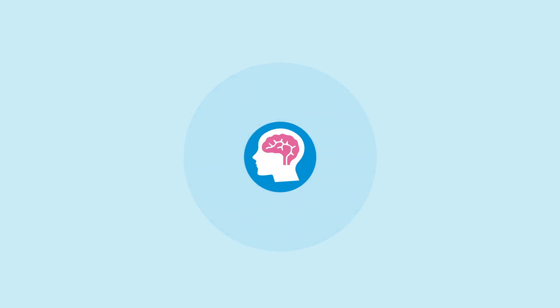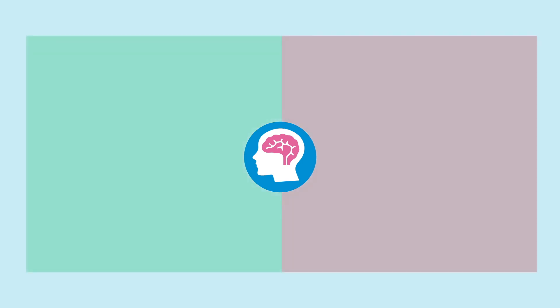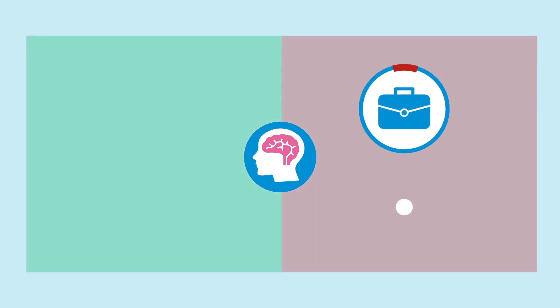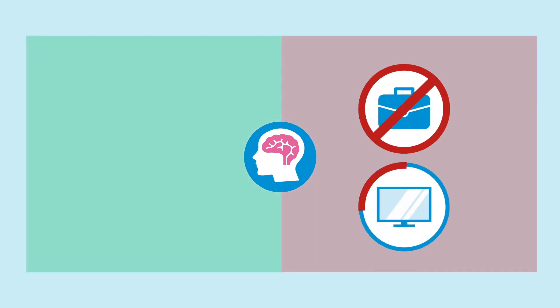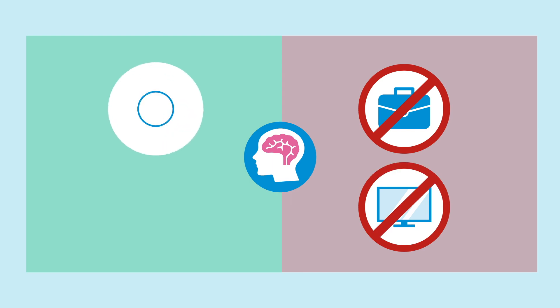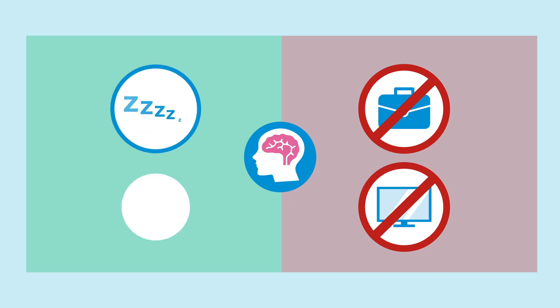Because the brain learns through association, it's also very important that you avoid other activities in bed like work or entertainment. You're only allowed to sleep or have sex in bed. The fact that sex is allowed might surprise you, but that's because sex and sleep are actually connected to the same part of the nervous system that controls relaxation.